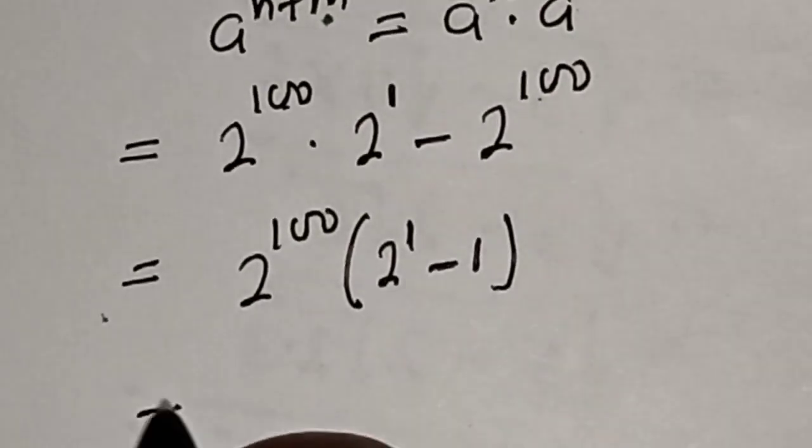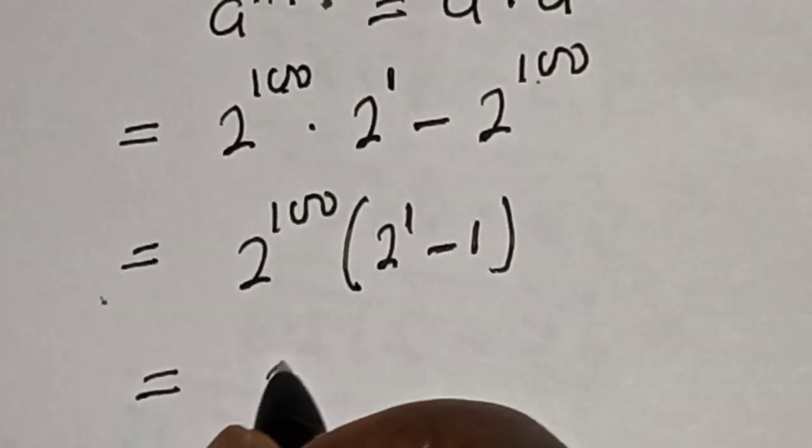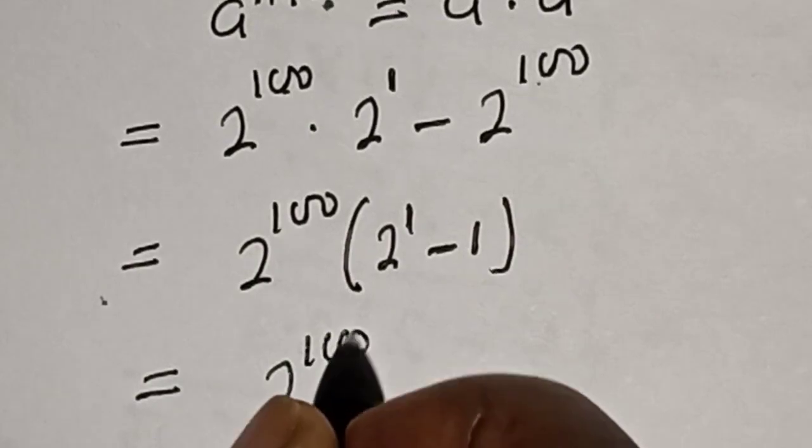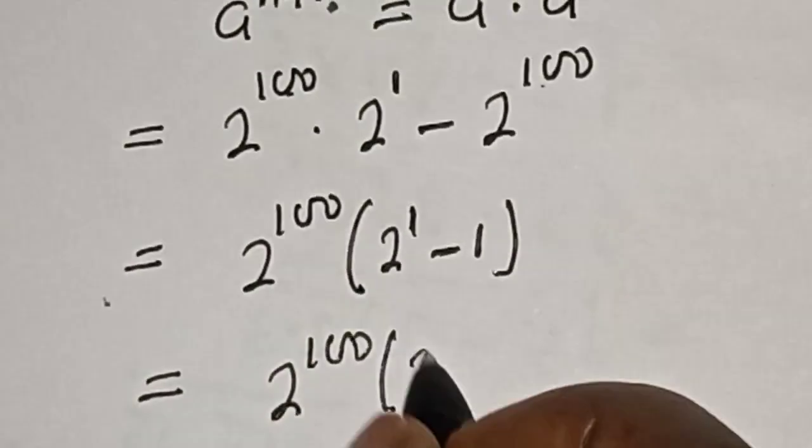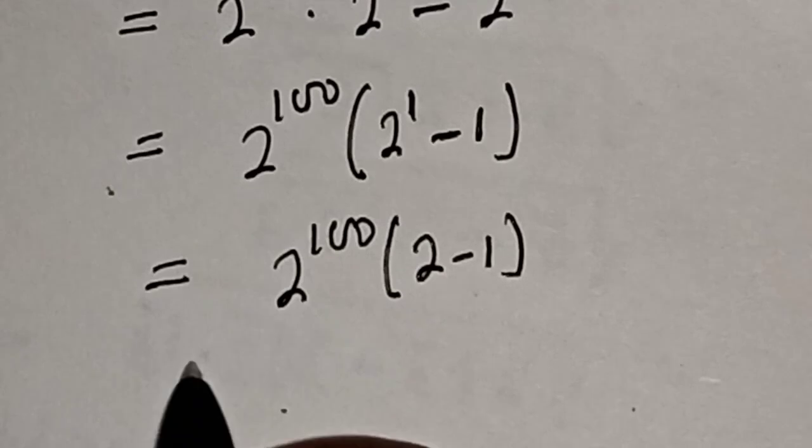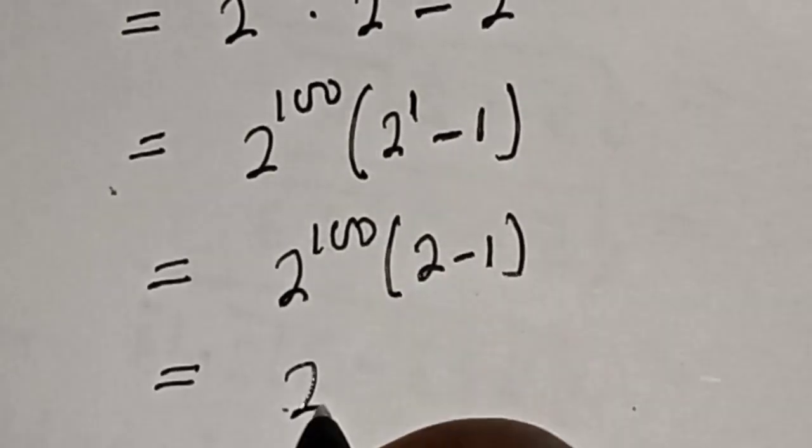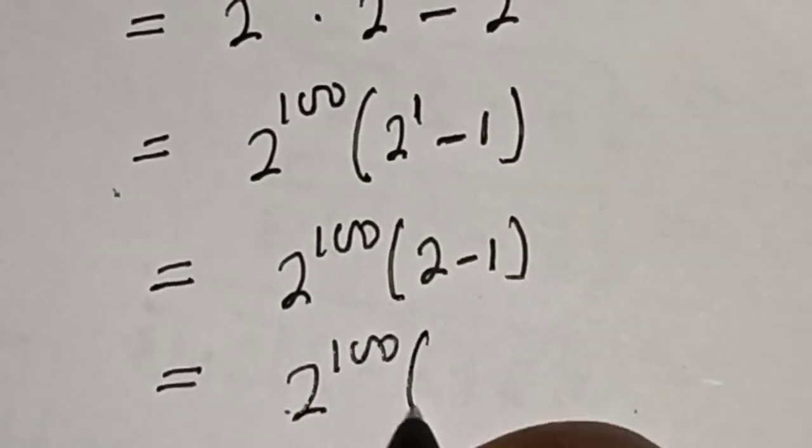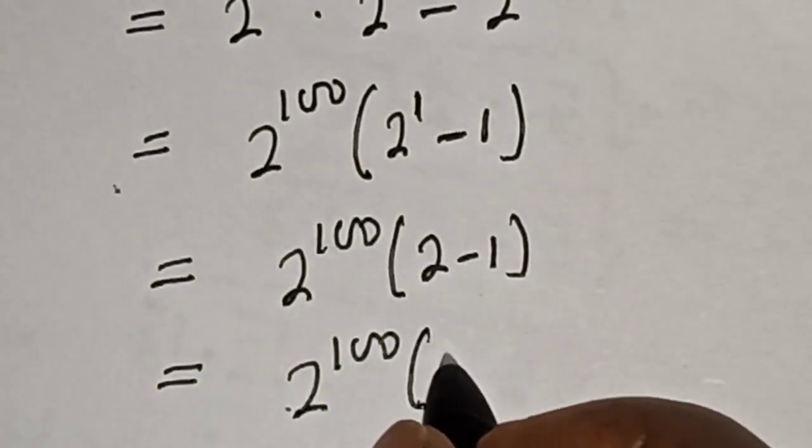This equals 2 raised to power 100 times the quantity 2 minus 1. 2 raised to power 1 is 2, and 2 minus 1 equals 1.